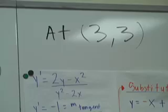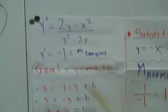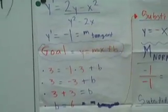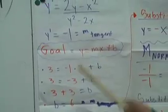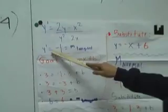Now our goal again is to find the equation of the tangent and normal, which is y equals mx plus b. So we have to find m tangent, which is negative 1. When you plug in 3 and 3 to this, you're going to get negative 1.